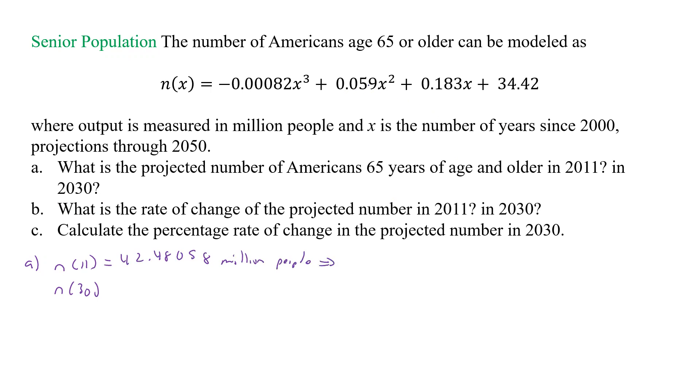The average number of decimal places that make sense are going to be three, so maybe I'll round that to 42.481 million people.